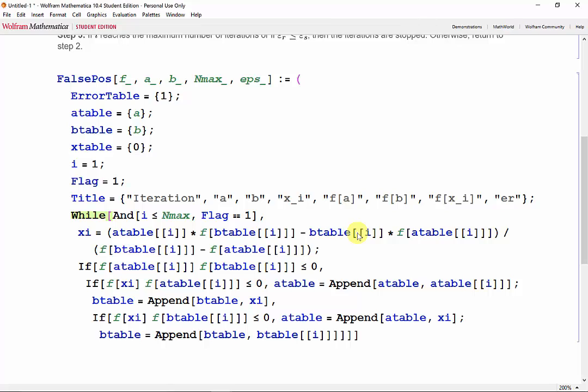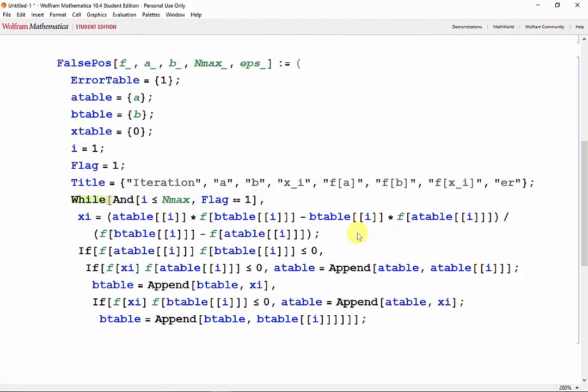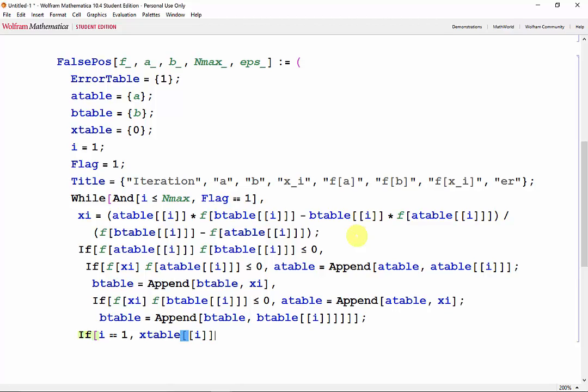Closing all those if statements. And then we replace the 0 we assigned with the actual value for xi, then calculate the relative error when i is greater than 1. So if i is equal to 1, xtable[i] is equal to xi.